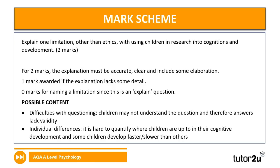Next two-marker: explain one limitation other than ethics of using children in research into cognition and development. Identify a limitation and explain it. Possible content: difficulties with questioning — children may not understand the question, so answers lack validity; or individual differences — it is hard to quantify where children are in their cognitive development, as some develop faster or slower than others. Because it's two marks, one mark for identifying the limitation and one for explaining it.